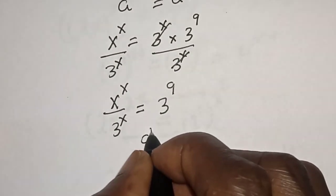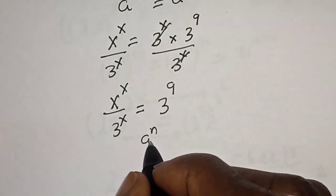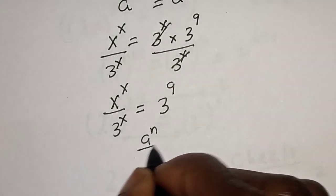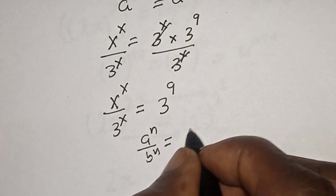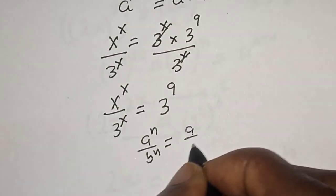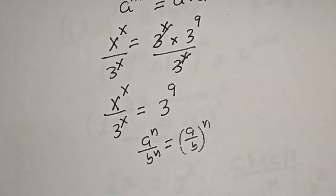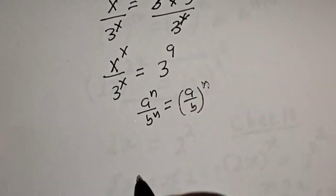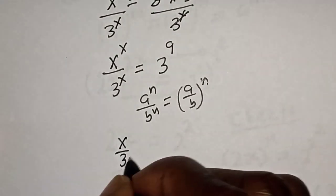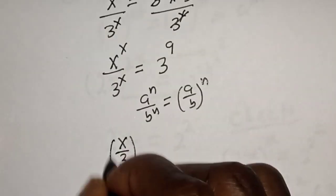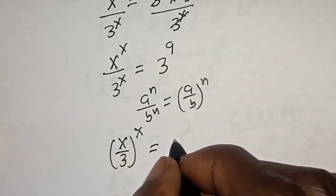Then take note of this also: if you have a to the power of n over b to the power of n, this is equal to a over b to the power of n. And we have s over 3, all to the power of s, is equal to 3 to the power of 9.